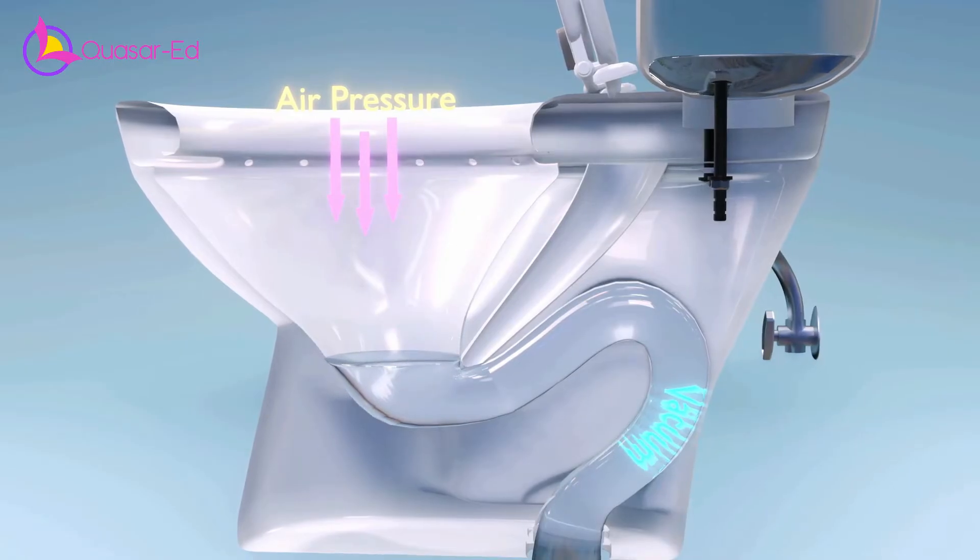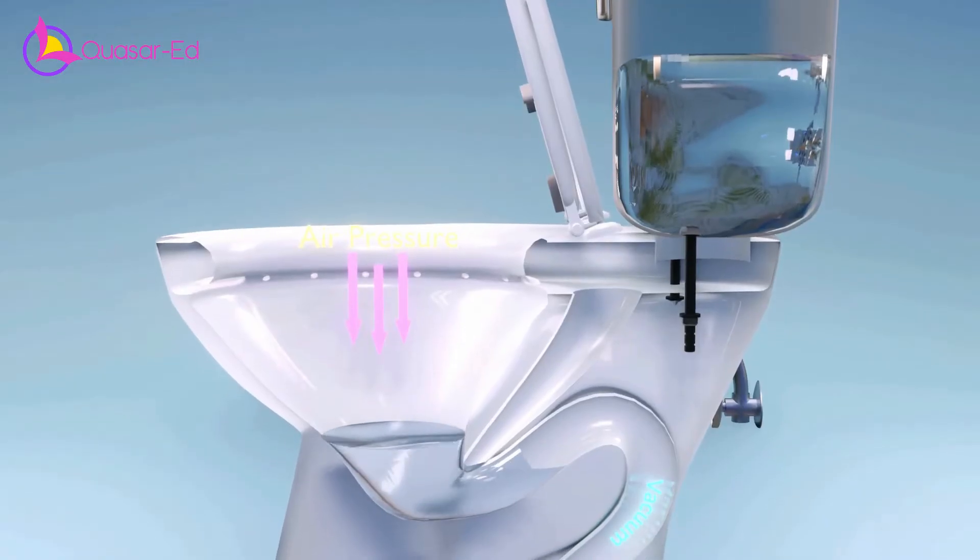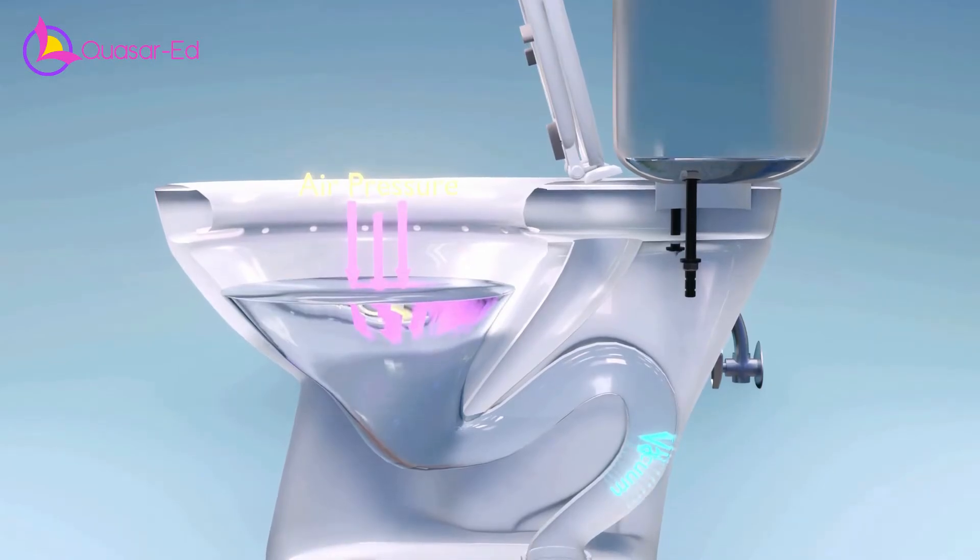That is why toilet needs to flush with so much water so that it can fill up the entire S-shape tube and start siphoning.